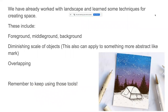Some of the things we've already talked about — we've already worked with landscape and learned some techniques for creating space. These include using foreground, middle ground, and background. These also include thinking about the diminishing scale of objects as you get deeper in the space. Things close to you are going to be larger; things far away are going to be smaller as they move up to the horizon line. This can also apply to something more abstract like mark — sometimes an artist makes larger marks in the foreground and smaller marks in the background to create that sense of space.